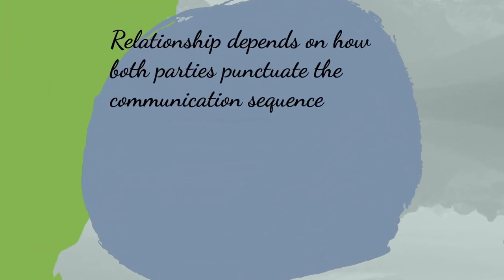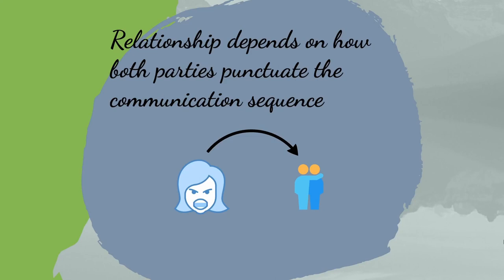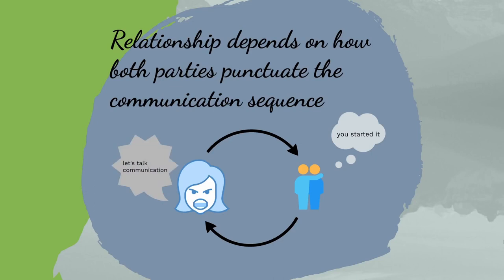The nature of a relationship depends on how both parties punctuate the communication sequence — a cause-and-effect sequence in communication. A classic example: the wife says she complains because her husband always hangs out with his friends, while the husband says he hangs out with his friends because the wife is always complaining. Each party has a subjective perception of who started it. To Watzlawick, such discrepancies are the root cause of communication problems, and can be avoided through metacommunication — talking about communication and cause-and-effect sequences.